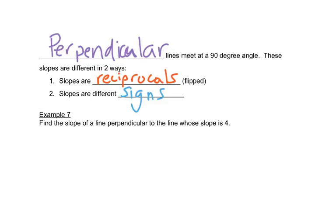So if we look at this, this slope is 4 over 1. To find the perpendicular slope, we have to flip it so it becomes 1 over 4, and we have to change the sign so it's a negative. So negative 1 over 4.